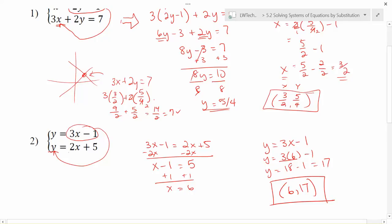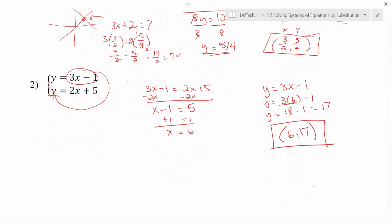And again, you can verify for yourself if you put 6 in for x here. 2 times 6 gives me 12, plus 5 is 17. It works in the other equation as well.